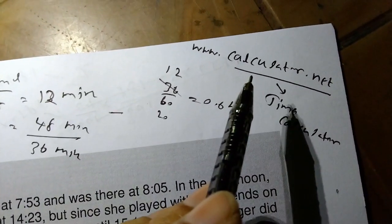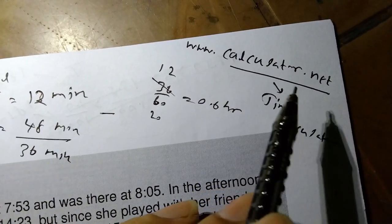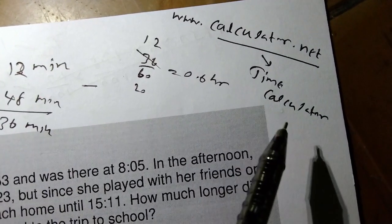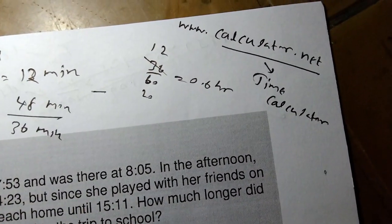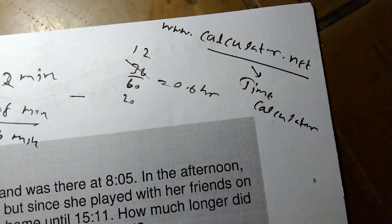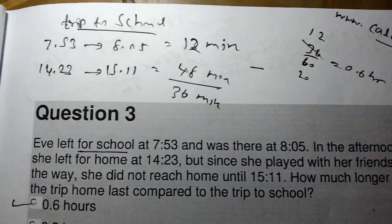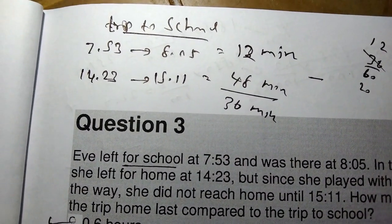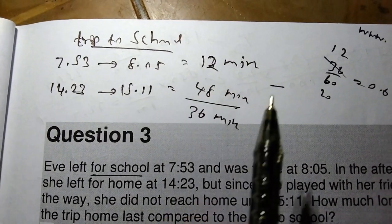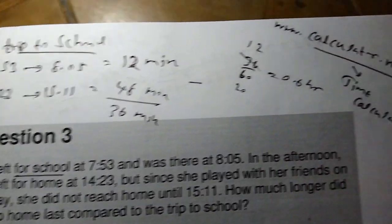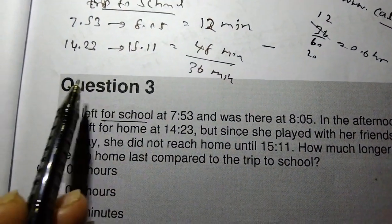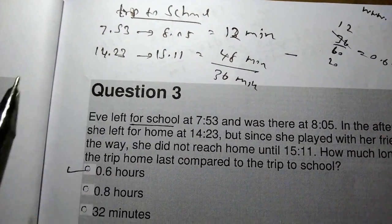You can use www.calculator.net or Google 'time calculator' to find a free time calculator on the web. Enter the times and you can easily find the duration. Use a time calculator — no need to subtract manually, it saves time.